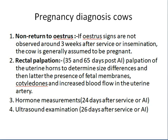The second method is rectal palpation. This is a procedure done by a veterinarian — the veterinarian enters his or her hand through the rectum and palpates the uterine horns. If the horns feel enlarged in size, the veterinarian can technically confirm that the cow is pregnant.